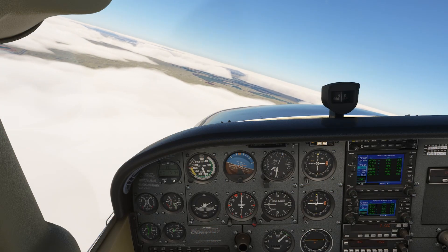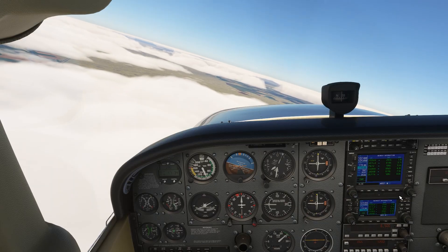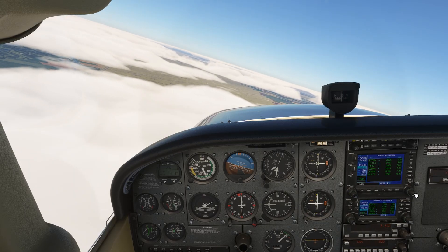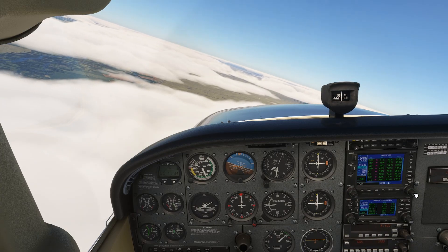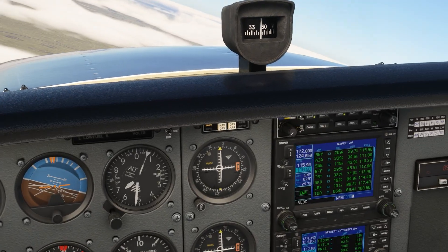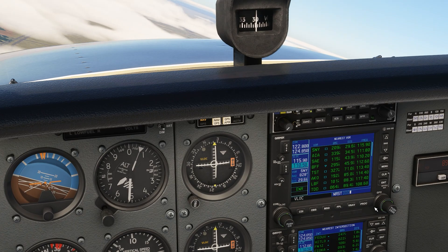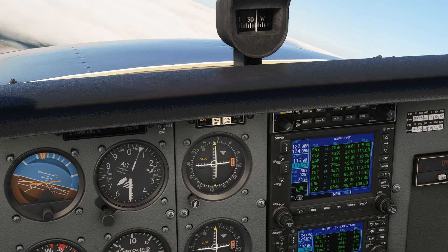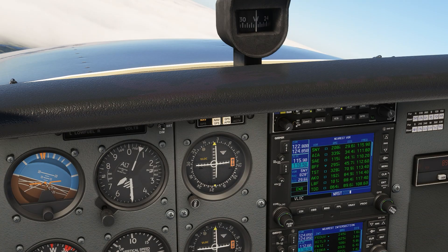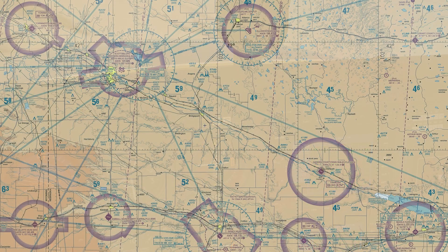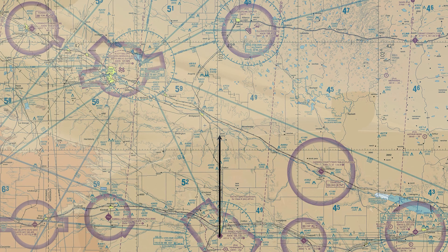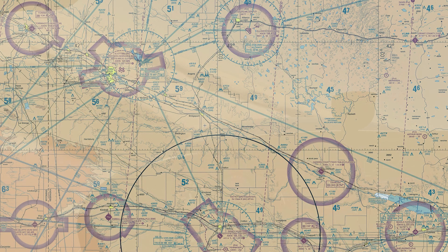Let's do the same exercise, but instead of using radials, we'll use DME distance. The GPS will give us distances from VOR stations. Why not just use the GPS to pinpoint our position, right? We have distances from about 10 VOR stations listed out here. The first one is SNY — that's Sydney VOR again. We're showing about 30 miles from that. The trouble is that with only distance information, we don't know a specific line from the station we might be on. This is 30 miles from the station, but we could be anywhere on this circle with that radius. We need more info.